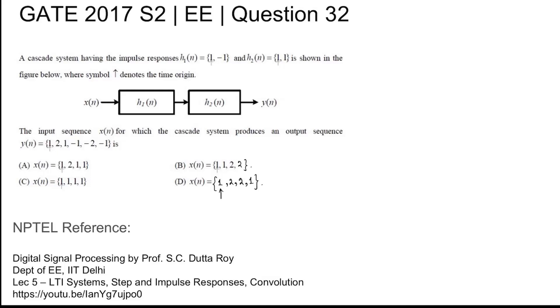This arrow denotes the time origin. The input sequence x(n) for which the cascade system produces an output sequence y(n) = {1, 2, 1, -1, -3, -1} with the arrow at this 1 is being asked for.